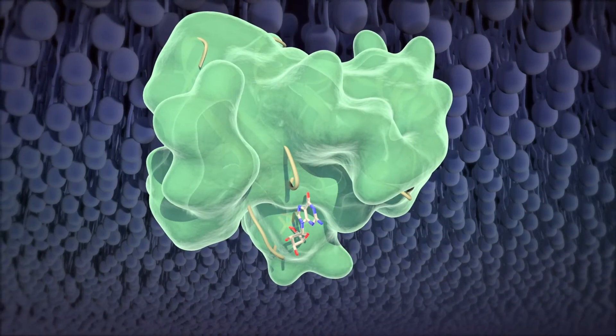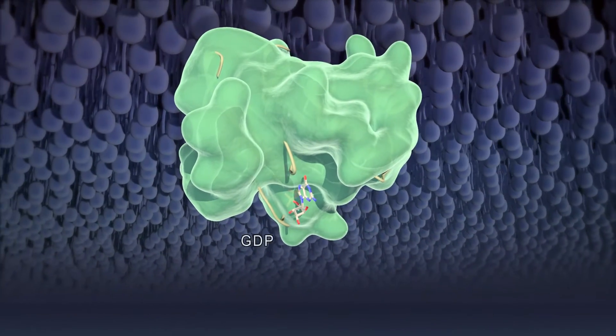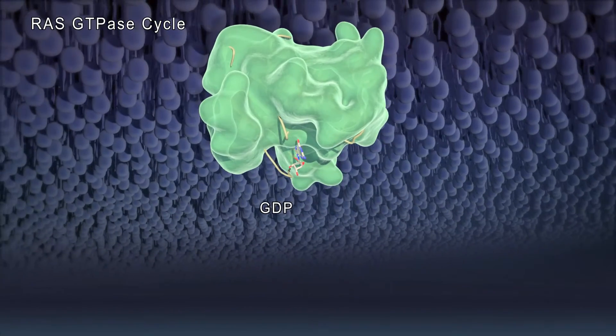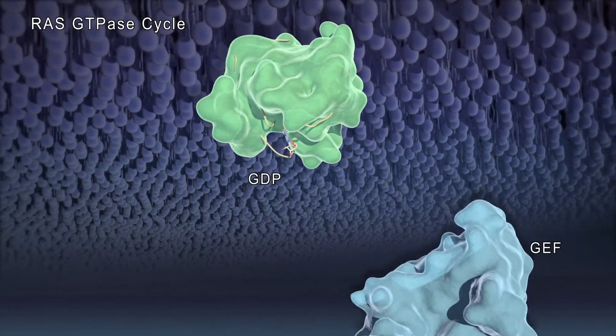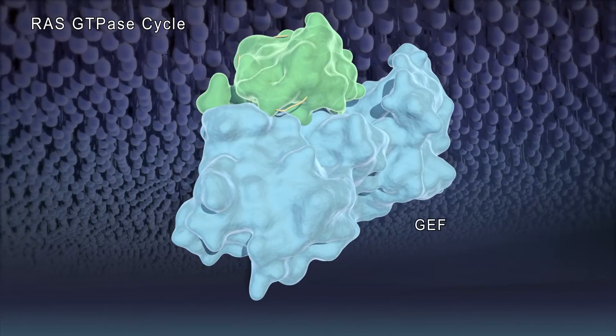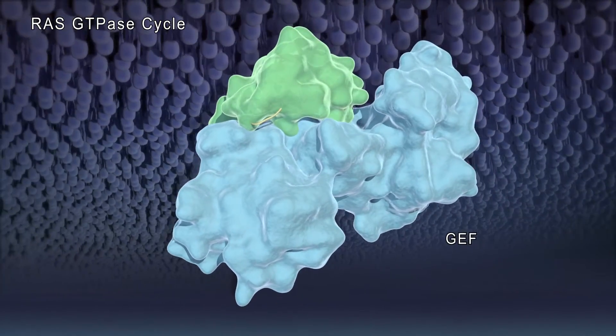The inactive state of the Ras GTPase is bound to GDP. A guanine nucleotide exchange factor can catalyze the release of GDP from the initial inactive state.